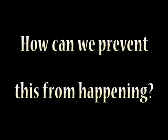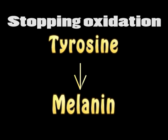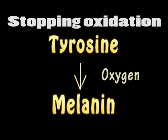So how can we prevent this from happening? As we have discussed, there are three active components in the browning process: tyrosine, phenylase, and oxygen. Therefore, we can interrupt this process by eliminating any one of the crucial components. Since tyrosine is impossible to get rid of every time you cut open an apple, our choices are to inactivate the enzyme or remove the oxygen entirely.